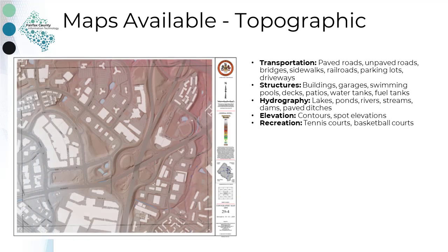The topographic map illustrates ground surface elevation as well as natural and human-made features. Features visible include transportation, structures, hydrography, and recreation. No property map layers are included. The current 2009 topographic map was derived from imagery taken in 2009. The map collection also includes a 2003 map series, which contains elevation data derived from imagery taken in 1997.